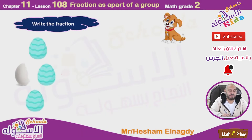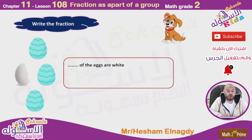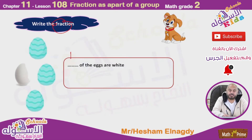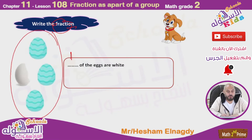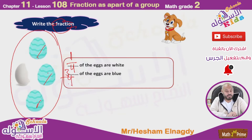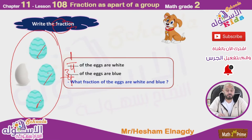Write the fraction — this exercise is very easy and very important. It says how many of the eggs are white. Write the fraction: one from the total number of eggs, so one over four, one-fourth. Of the eggs that are blue: one, two, three — three from the total, so three over four, three-fourths.